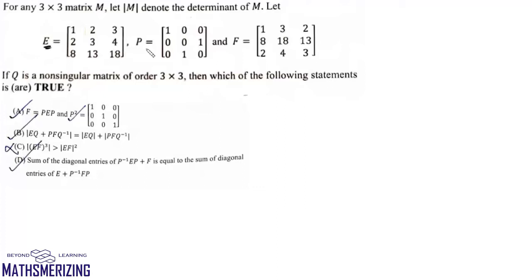We are given three matrices E, P, and F, and Q is a non-singular matrix of order 3×3. We need to determine which of the following statements is or are true.